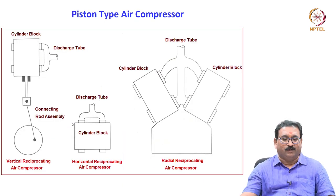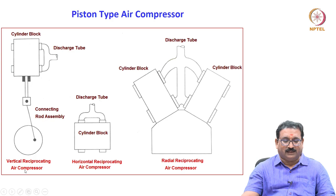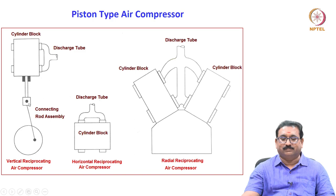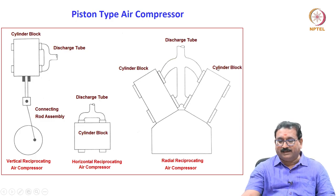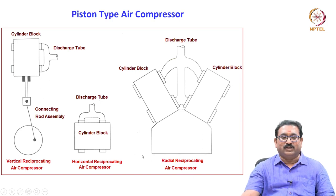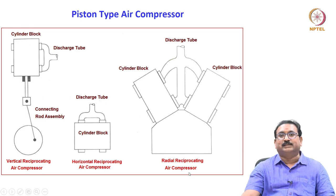Based on the piston arrangement, you will see the piston is moving up and down — these are classified as vertical reciprocating air compressors. There is a cylinder block and discharge tube, and a connecting assembly. In the horizontal reciprocating air compressor, cylinders are mounted horizontally. In the radial type, cylinder block 1 and cylinder block 2 are mounted radially in multiple stages — it is known as the radial reciprocating air compressor. Based on the cylinder mounting, they are classified as vertical, horizontal, and radial reciprocating air compressors.